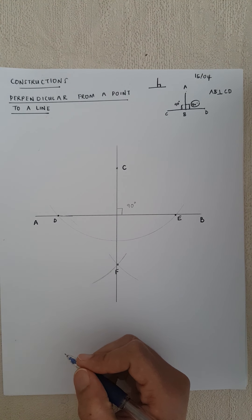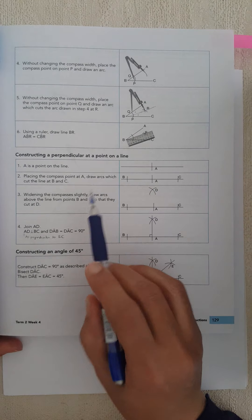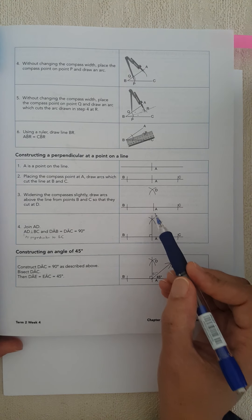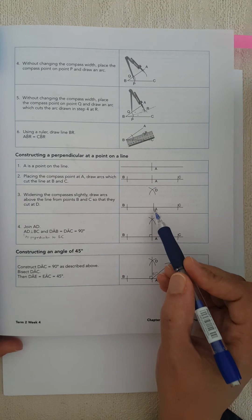This is different from yesterday. What we did yesterday was constructing a perpendicular at a point on a line — we started on the line and drew the arcs, then joined it down to the bottom. Today we're doing from a point onto the line. It's very important to read your question carefully in the test, and then you have to do either one of them to draw a 90 degree angle.